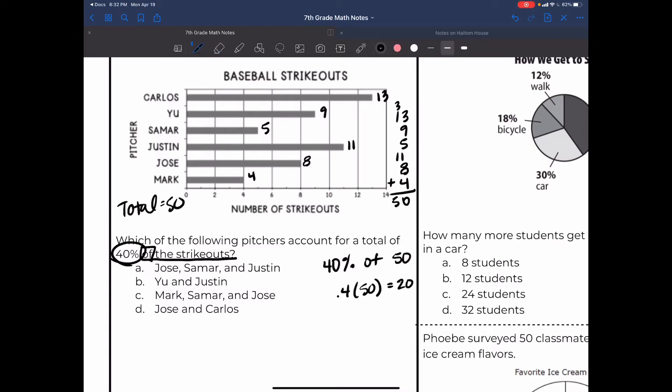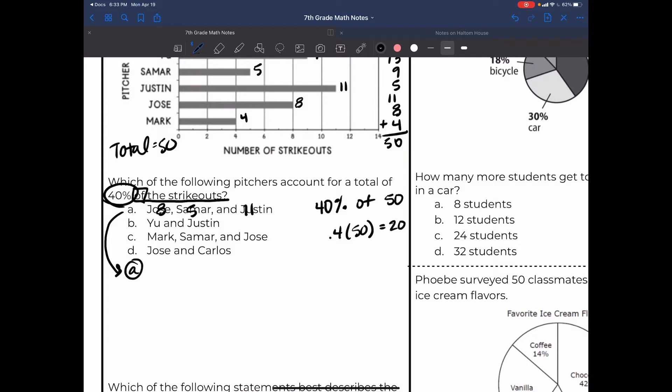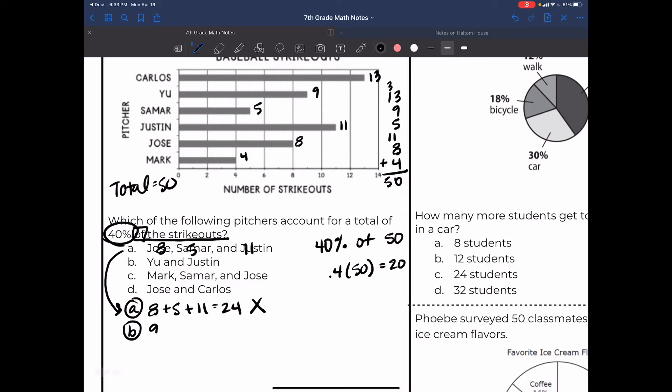All right, so I'm looking for a total sum of 20 strikeouts. This is where I'm going to pull out those numbers that we already found. So Jose, Samar, and Justin - Jose had 8, Samar had 5, and Justin had 11. I have some room down here, I'm just gonna re-show this work down here. So 8 plus 5 plus 11, does that equal 20? Well, 8 plus 5 is 13, 13 plus 11 is 24, so no. I can't be A. B is Yu and Justin. Yu is 9 and Justin is 11, which is 20, so that is my answer. But clearly, you know, we're gonna go through the other answer choices just to validate and make sure that that is my answer.